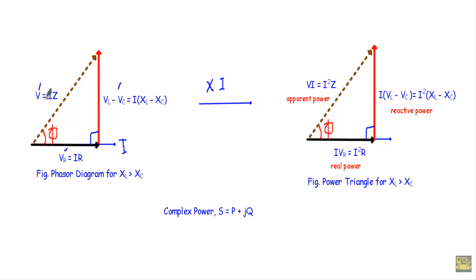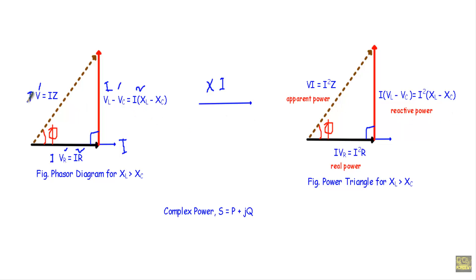For the case when XL is greater than XC, multiplying each side of the voltage triangle by current I gives the power triangle. I·VR or I²R represents real power. I·(VL minus VC) equals I²·(XL minus XC) represents reactive power. Multiplying the hypotenuse V by I gives I·V or I²Z, which is the apparent power.